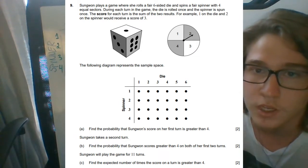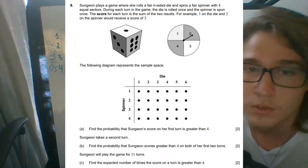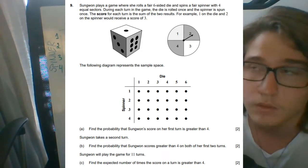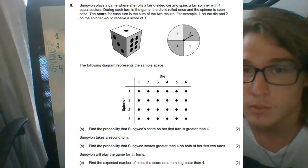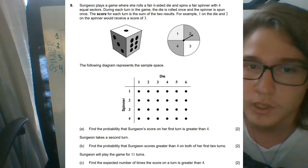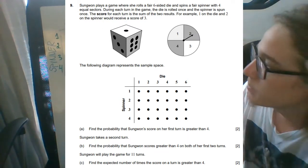So for example, if she rolls one on the die and two on the spinner, the score will be three. If it's four on the die and four on the spinner, the score would be eight. And they give us this diagram.